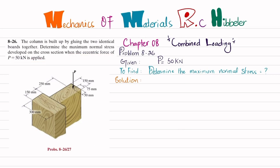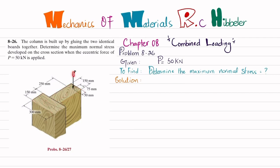You can see this is the cross section of the column made from two identical boards that are glued together. This is board number one and this is board number two. There is an eccentric force applied away from the center, and you have to find the maximum normal stress developed in the column.